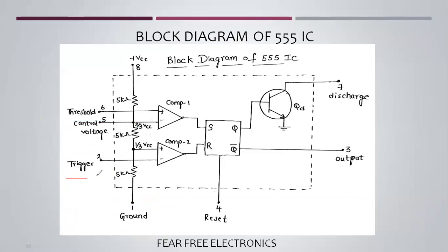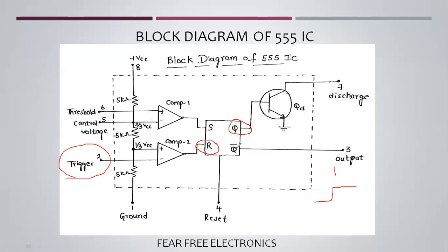The trigger minus terminal input is compared against the plus terminal, which is fixed at 1/3 VCC. If the trigger input voltage is lower than 1/3 VCC, the comparator output sets the flip-flop. When the flip-flop is reset, Q becomes 0 and Q-bar output becomes 1, meaning the output is high. The output pin (pin 3) is the complementary output of the flip-flop.